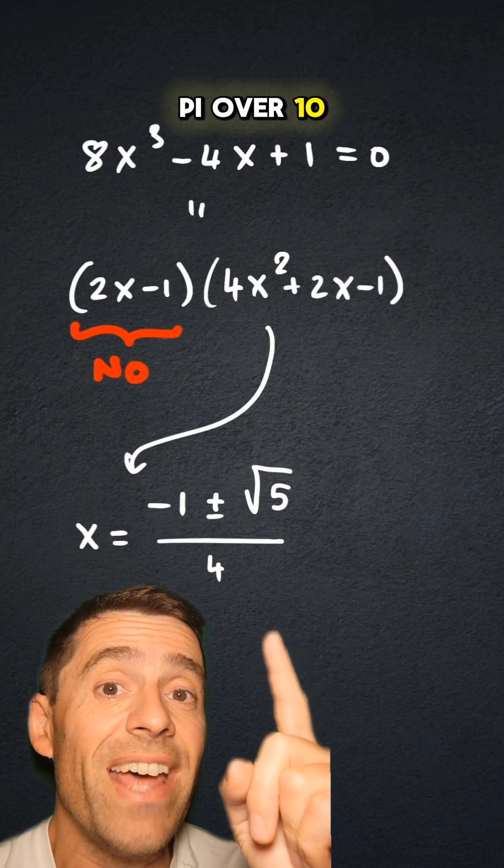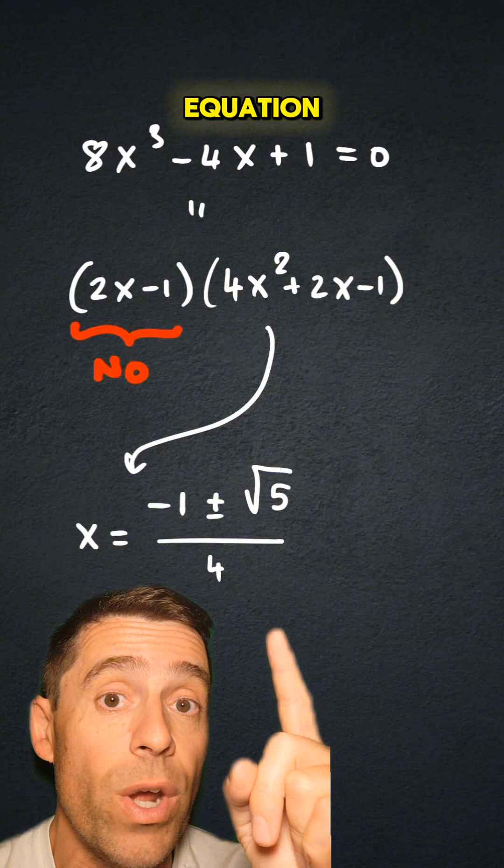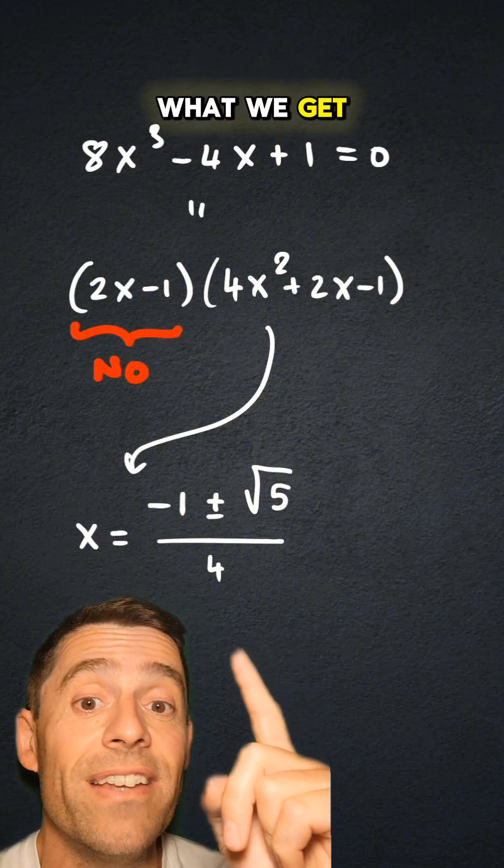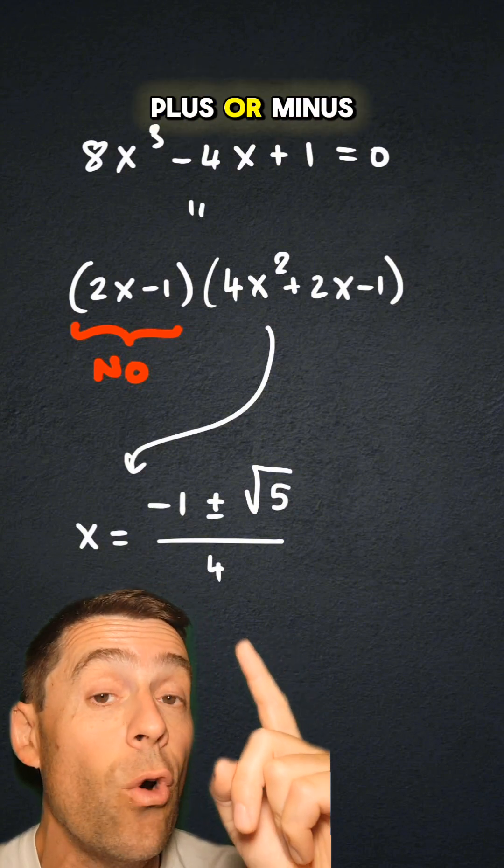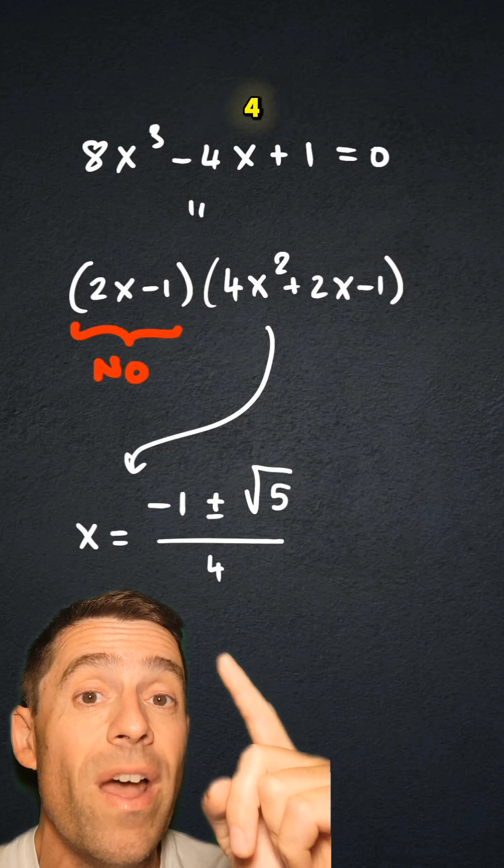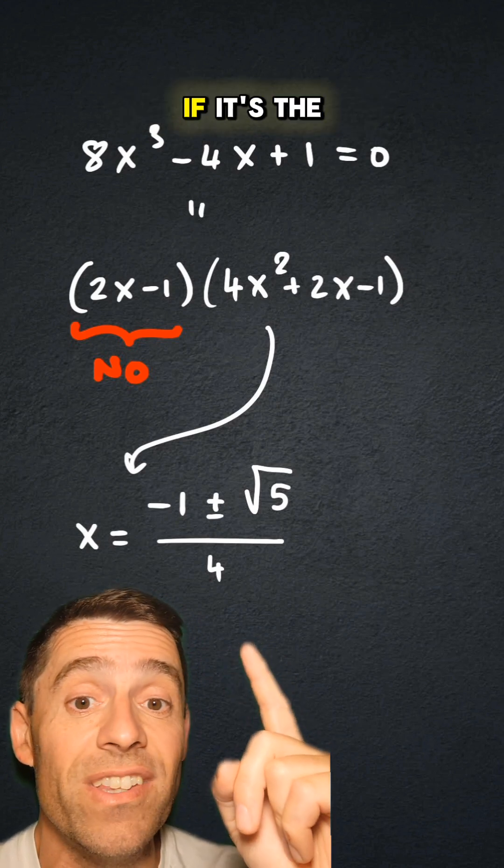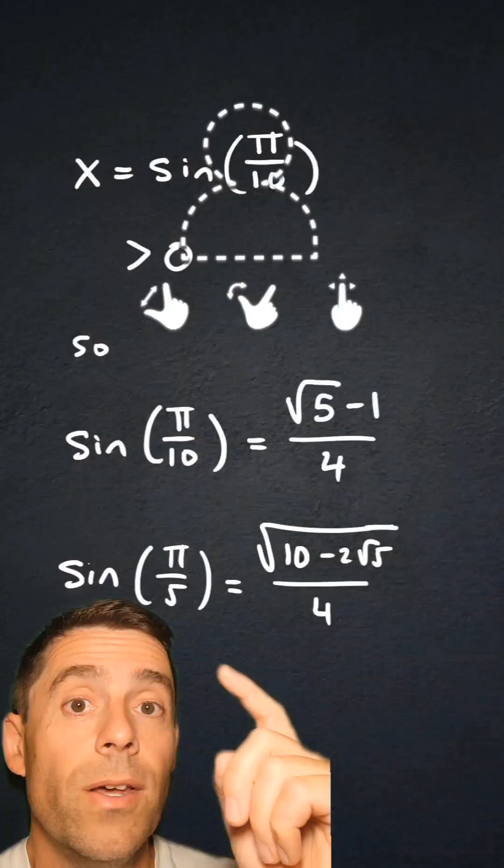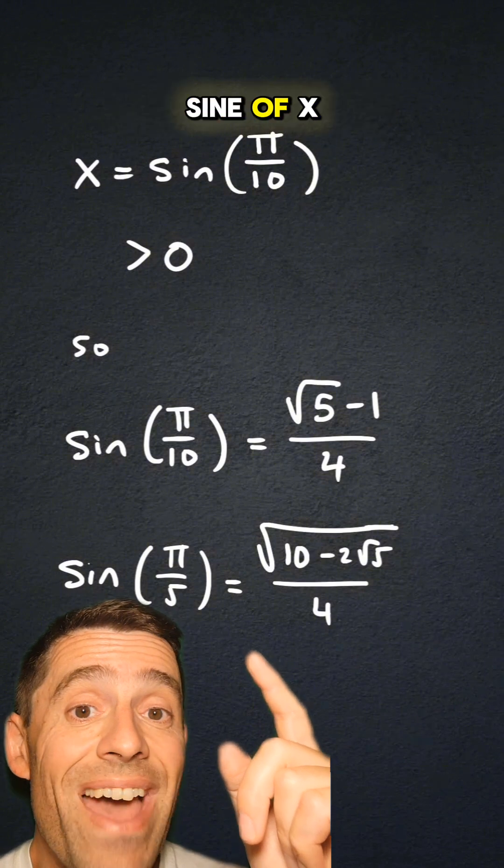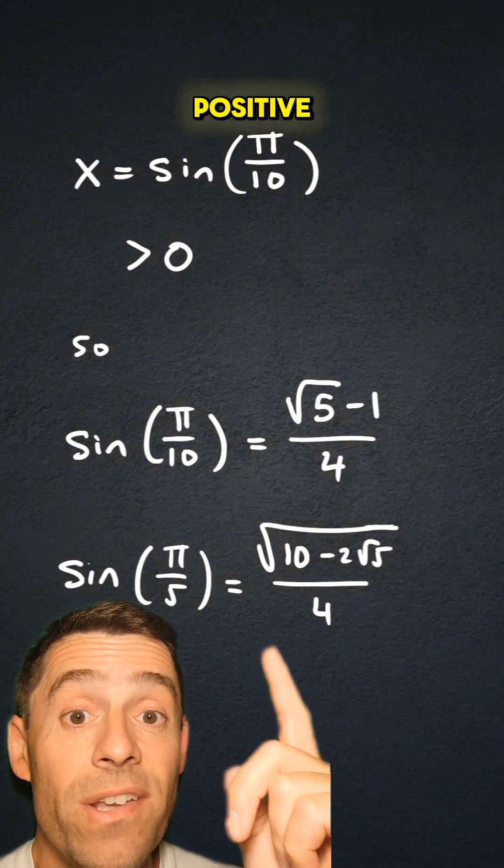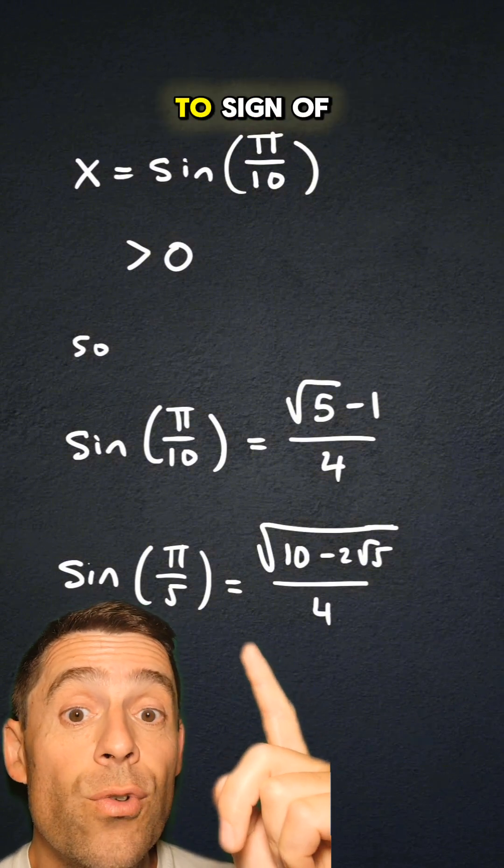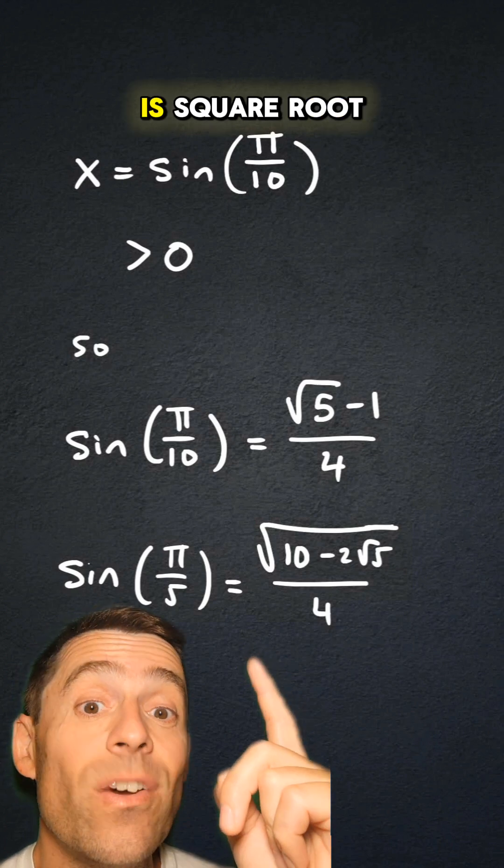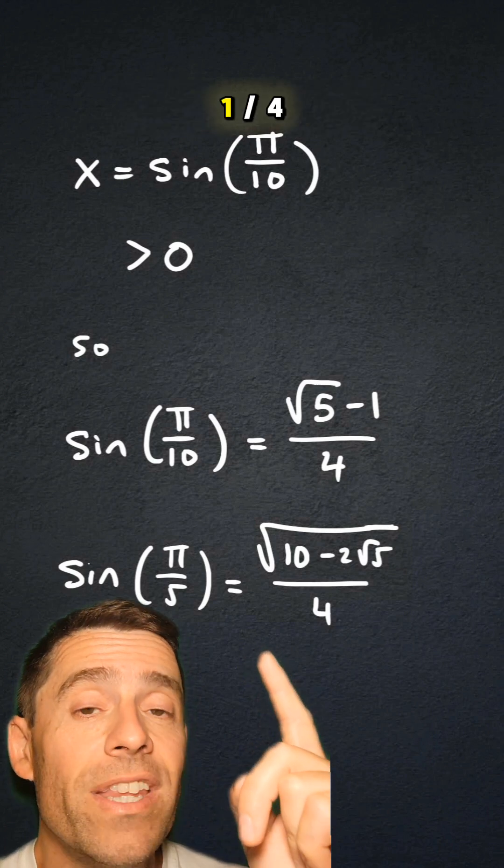So sine of π/10 has to satisfy the other quadratic equation. And by the quadratic formula, what we get is that x is minus 1 plus or minus the square root of 5 divided by 4. And now we have to decide if it's the plus or the minus. But again, by the properties of sine of x, the sine of π/10 has to be positive, which leads me to sine of π/10 is the square root of 5 minus 1 divided by 4.